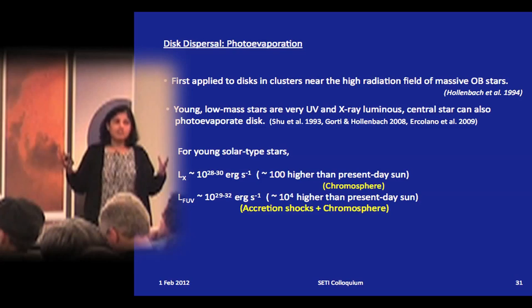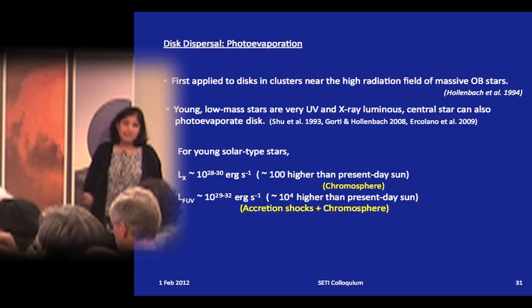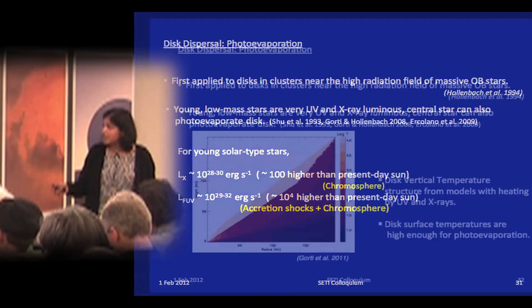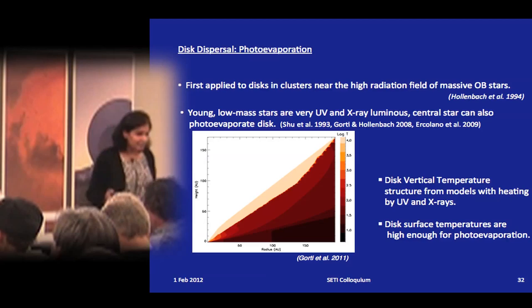Not all stars are near massive O stars, so you need a mechanism that explains disc dispersal in general. It turns out that young low-mass stars are themselves capable of eroding their own discs, because they have very high UV and X-ray luminosities — X-rays up to about 100 times higher than the present-day Sun, and FUV luminosities up to about 10,000 times higher. The accretion shock landing on the star also radiates primarily in the FUV. This energetic radiation field drives photoevaporative flows.